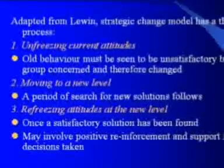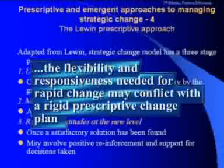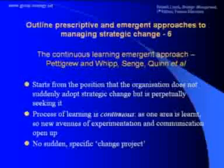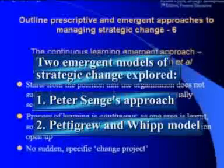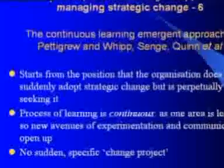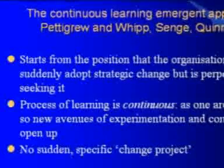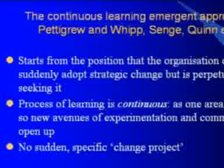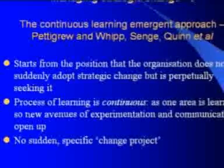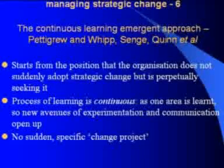Prescriptive models of change work best where it is possible to move clearly from one state to another. In times of rapid change, such clarity may be difficult to find and such models may be inappropriate. There are a number of emergent approaches to strategic change. According to Peter Senge, the learning organisation does not suddenly adopt strategic change, but is perpetually seeking it. Therefore, the organisation is using its learning, experimentation and communications to renew itself constantly, making strategic change an emergent, constant process.